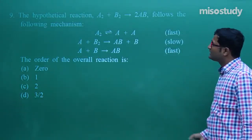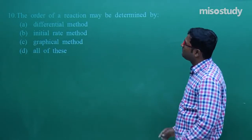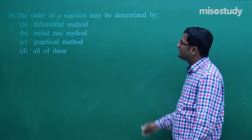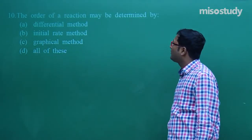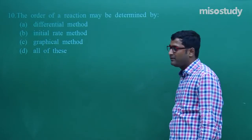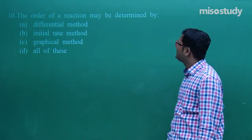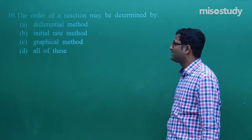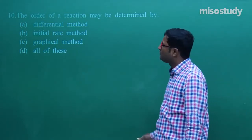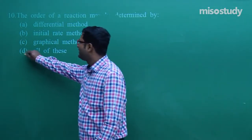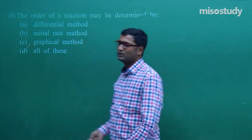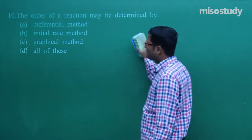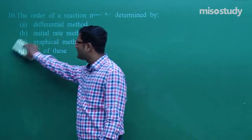Question number 10 — the last question of today's lecture. The order of reaction may be determined by the differential method, initial rate method, or graphical method. All of these are correct, so D is the correct option.